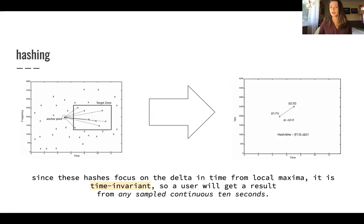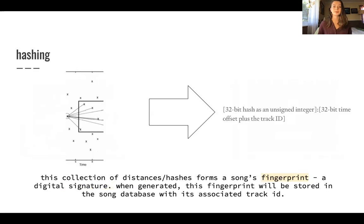So this collection of distances between local maxima, also known as hashes, forms a song's fingerprint, which is a digital signature. When generated, this is like prior to something being recognized. Basically Shazam had to go through and do this for millions of songs so that they could store these unique fingerprints in their database, which has created quite a competitive moat for them as a company because it's really difficult.